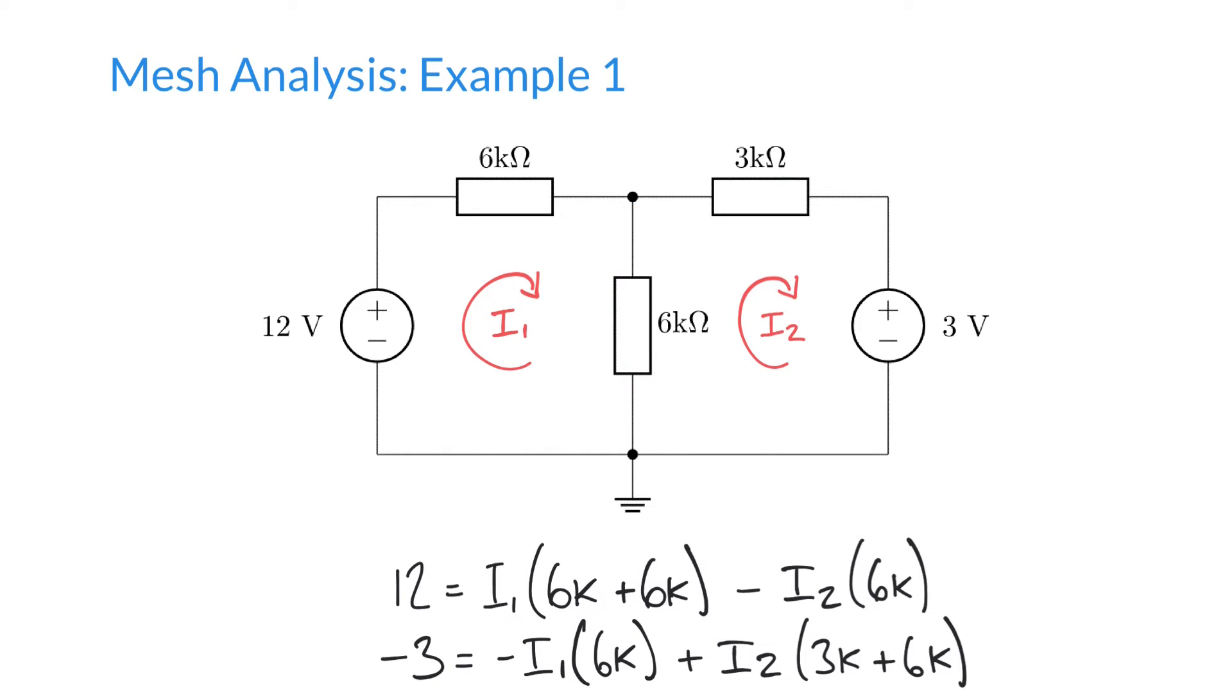And then we have our second equation minus 3 because our 3 volts is in opposition with our positive clockwise convention. We have minus 3 volts and that being equal to minus I1, this I1 current flowing down through the 6k plus I2 flowing in this pane here through the 3k and the 6k respectively.